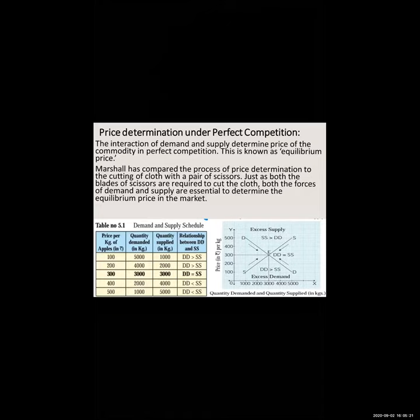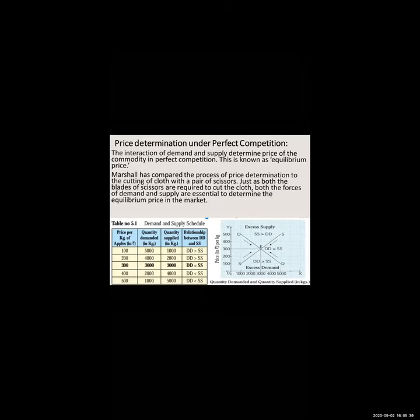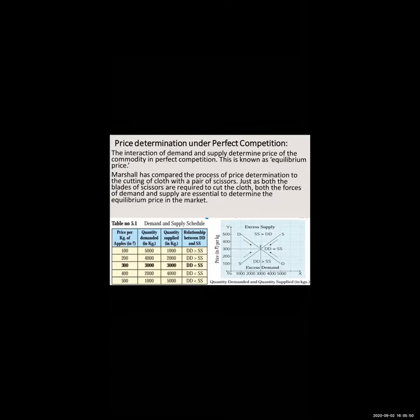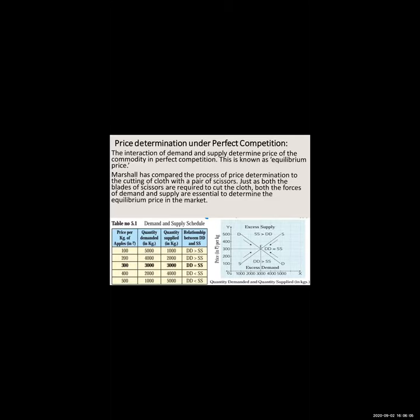The interaction of demand and supply determines the price of the commodity in perfect competition, as single price is a very important feature of perfect competition. If sellers start putting their own price, the features of perfect competition will not prevail in the market. That is why the complete price is dependent upon the interaction of demand and supply. When the demand and supply curves meet, at that particular point the price is fixed — this is known as the equilibrium price.